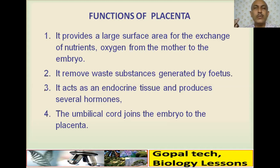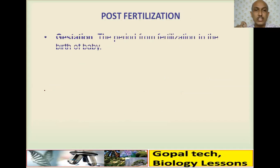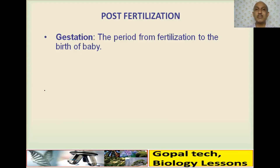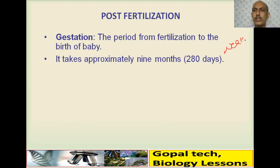The placenta plays a very important role and indicates the mother is pregnant, so the next menstrual cycle stops. After fertilization, there are certain terminologies to remember. Gestation is the period from fertilization to the birth of the baby — in human beings it is approximately nine months, or about 280 days. Find out how many weeks that corresponds to.